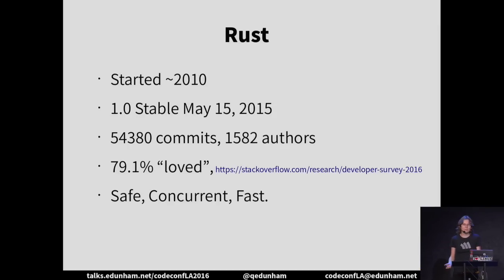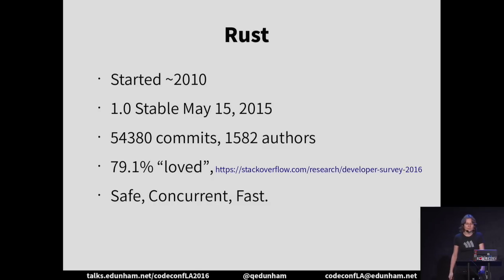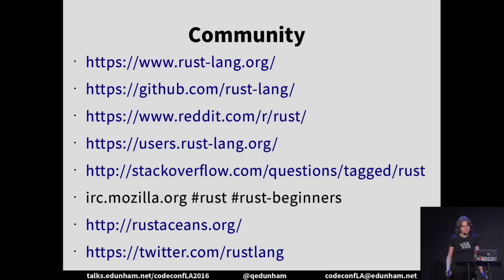As Herman just taught you about, Rust is a programming language designed to be safe, concurrent, and fast. We've been stable for just over a year now. 1.0 came out on May 15th of 2015. You might have heard of it because it was the most loved language in Stack Overflow's recent developer survey, with almost 80% of respondents saying Rust is awesome. And you can engage with us on all of these media and more.